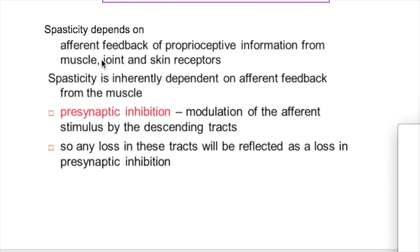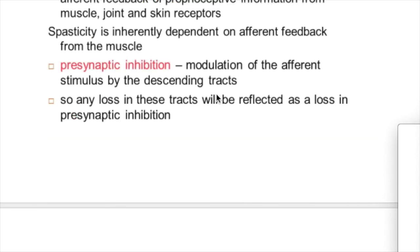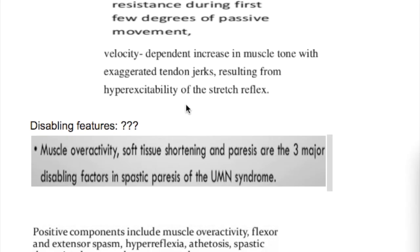Spasticity depends on afferent feedback of proprioceptive information from muscles, joints, and skin receptors — it is inherently dependent on this afferent feedback. Presynaptic inhibition is the modulation of afferent stimuli by the descending tracts, so any loss in these tracts will be reflected as a loss of presynaptic inhibition.